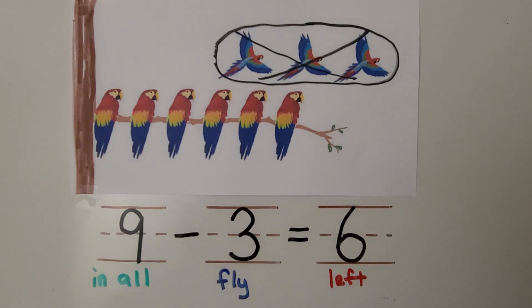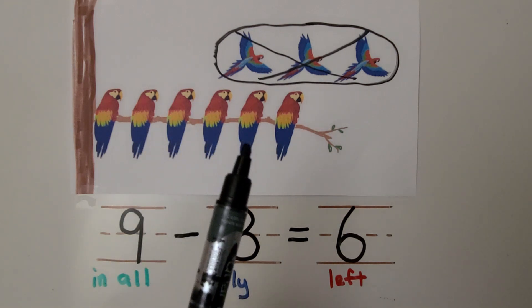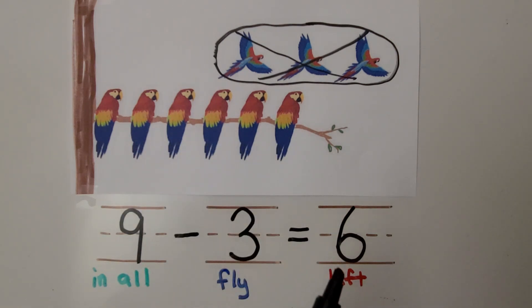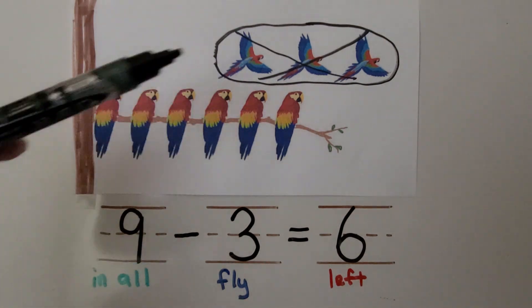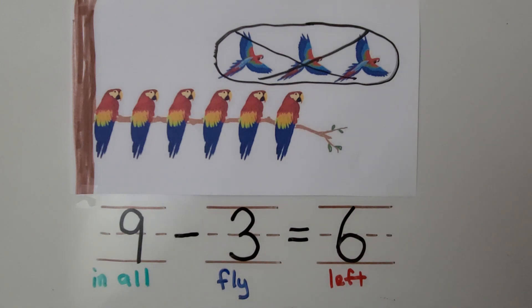How many birds are left on the branch? 1, 2, 3, 4, 5, 6. There are six birds left on the branch and the number taken from the set of birds is the number that we crossed out. The number being taken away is 3 and there are six left.